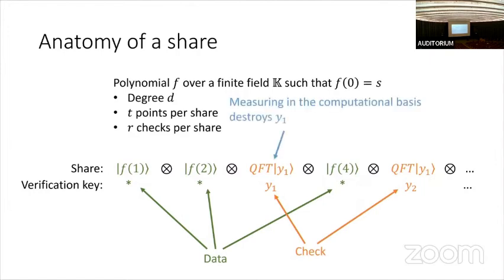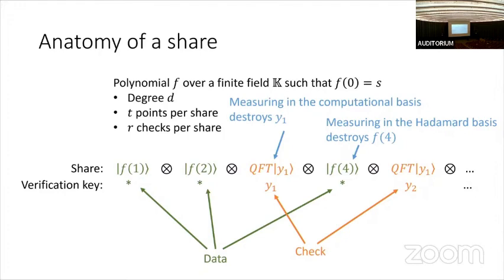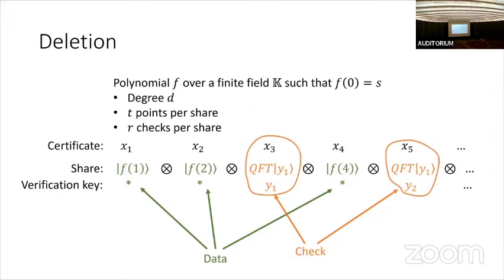Mixed in with these evaluations are some random Fourier basis elements, which act as the check positions. As you are all aware, if you accidentally measure a position in the wrong basis you completely destroy the information, and this holds for both bases. So if we want the adversary to delete the information, we simply ask them to measure everything in the Fourier basis. Because it doesn't know which positions are which, the best it can do is measure almost everything in the Fourier basis, and whatever the measurement result is gives the certificate. We can then check each of the check positions and compare them to what the actual Fourier basis values should be.